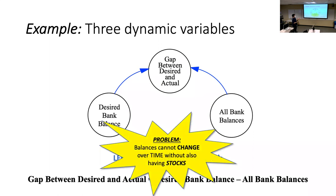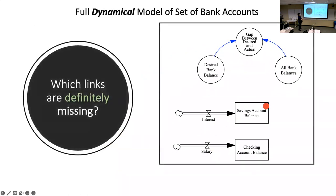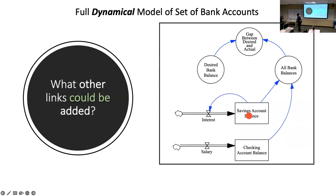Drawing both incoming links gives the converter access to that information, and VENSIM will report no errors. But this isn't yet a dynamical model because there are no stocks. Changing over time implies stocks — so the full model has a savings account balance changed over time by interest, and a checking account balance changed over time by salary. The links missing: all bank balances needs links from both savings account balance and checking account balance.